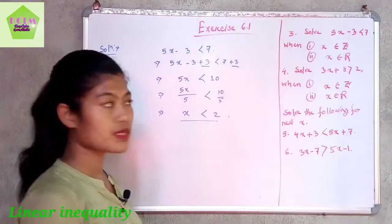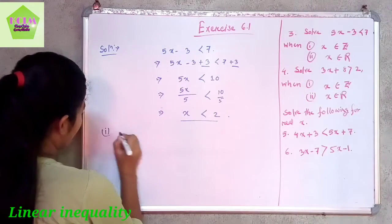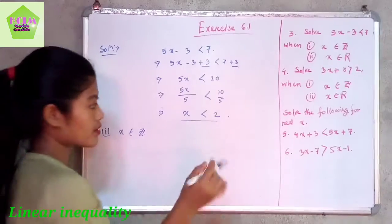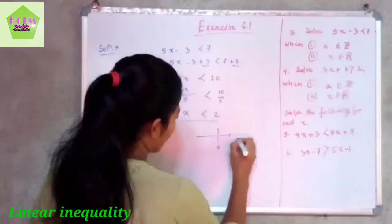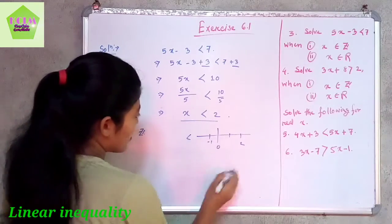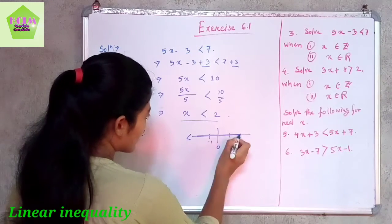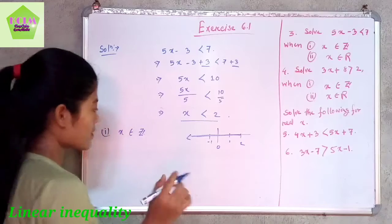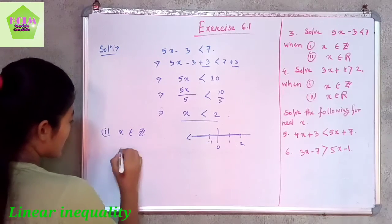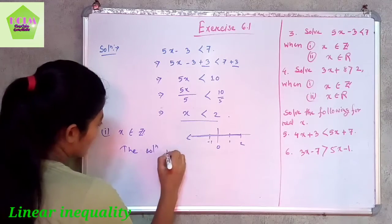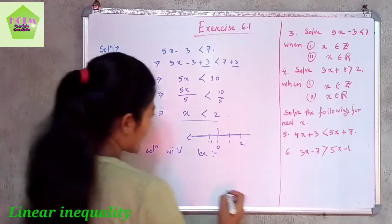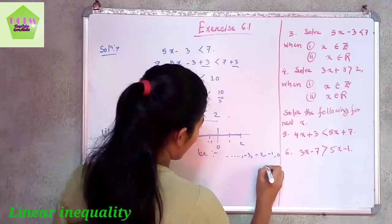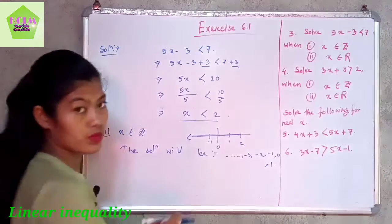The solution is x less than 2, but we are given conditions. When x belongs to the set of integers, the integers less than 2 will be: 1, 0, minus 1, minus 2, minus 3, and so on up to minus infinity. So the solution for integers is the set: minus 3, minus 2, minus 1, 0, and 1, not including 2 since this is strictly less than 2.